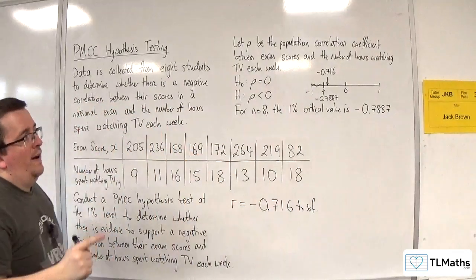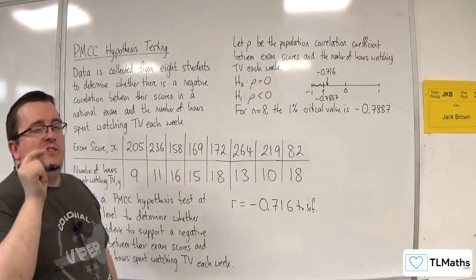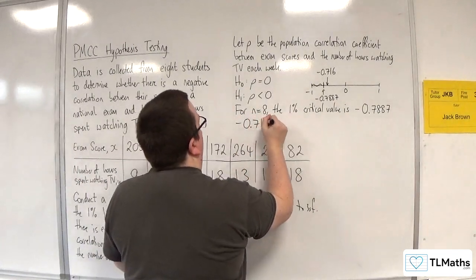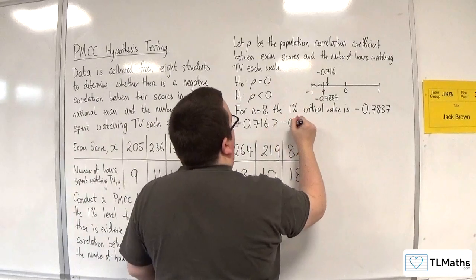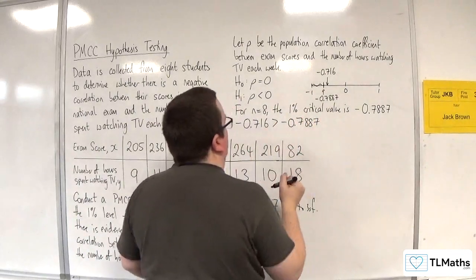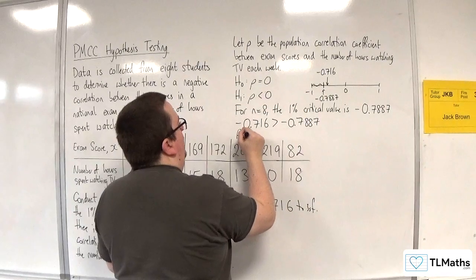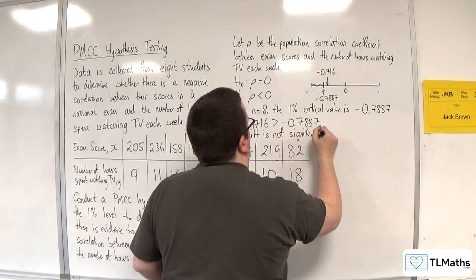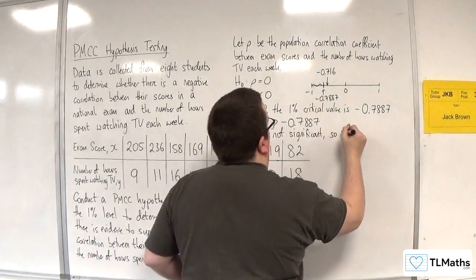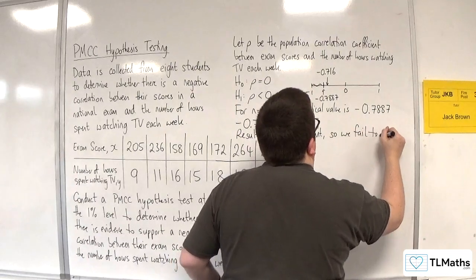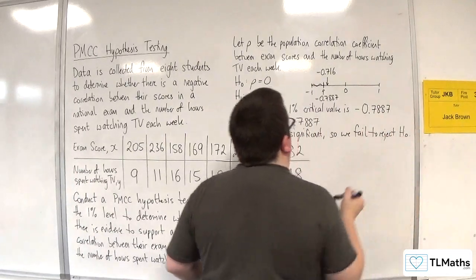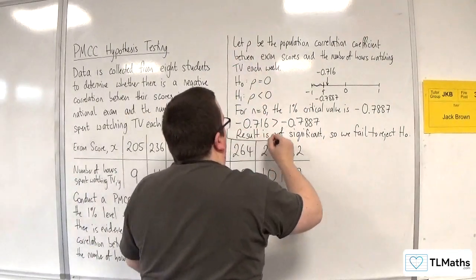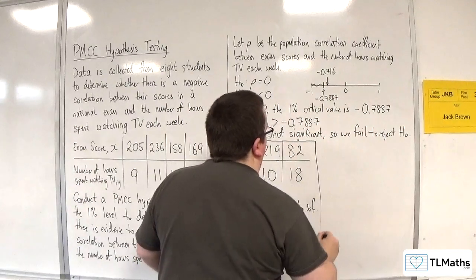So the R value that we calculated is not in the critical region. Minus 0.716 is larger than minus 0.7887. So what we can say is the result is not significant. So we fail to reject H0. So if you're not in the critical region, you fail to reject.